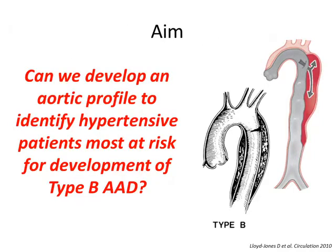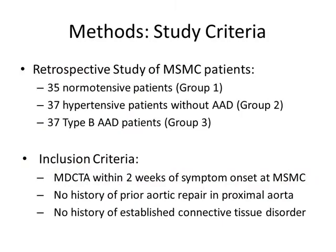As such, we sought to develop an aortic profile to identify hypertensive patients most at risk for development of type B AAD. In order to do this, we performed a retrospective study of Mount Sinai patients who presented to the emergency room complaining of chest pain, and who received a CT angiography to rule out aortic dissection and other thoracic pathologies.